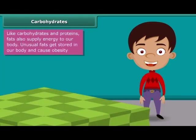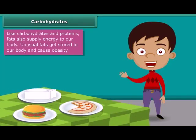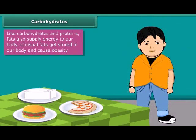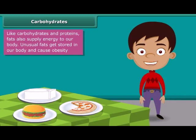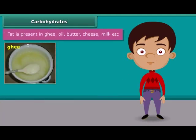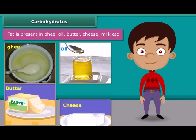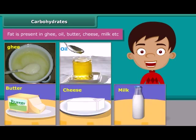I know that you all love pizza, burger, cheese, etc. But your parents do not allow you to eat them regularly, because such foods contain large amounts of fat. Fat supplies us with energy. If we don't use up this energy, our bodies build up a store for future use in the form of body fat. This is the reason why people eating much oily food become obese. Ghee, oil, butter, cheese, and milk are some main sources of fats.